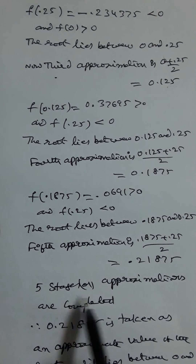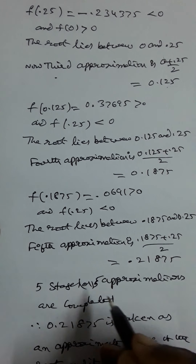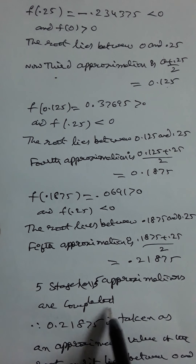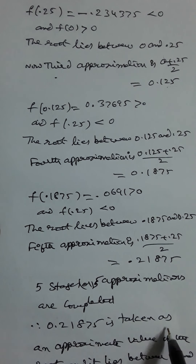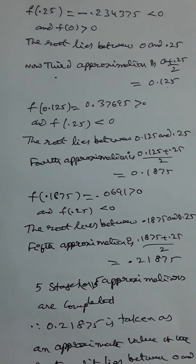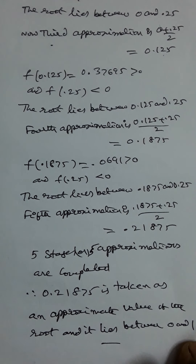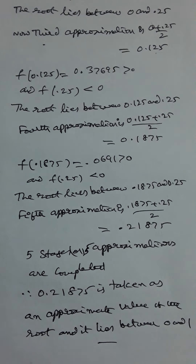Fifth approximation: x₅ = (0.1875 + 0.25)/2 = 0.21875. Five stages (five approximations) are now completed. Therefore, 0.21875 is taken as an approximate value of the root, which lies between 0 and 1.